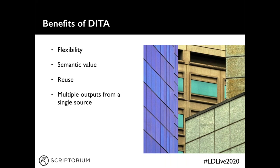Now let's talk about some of the reasons you might want to use DITA and some of the benefits it offers. Being an open standard makes DITA flexible — it can be used with a variety of different tools for authoring, editing, formatting, and storing content. If your business goals or content needs change, being in DITA makes it easier to move to a different toolset while keeping the same source content. The elements used to mark up your DITA content give it semantic value. Every piece of content is tagged, and that tag has meaning — such as paragraph, step, or hazard statement — so both authors and tools know what kind of information is in each tag. Semantic tagging also helps with search and filtering.